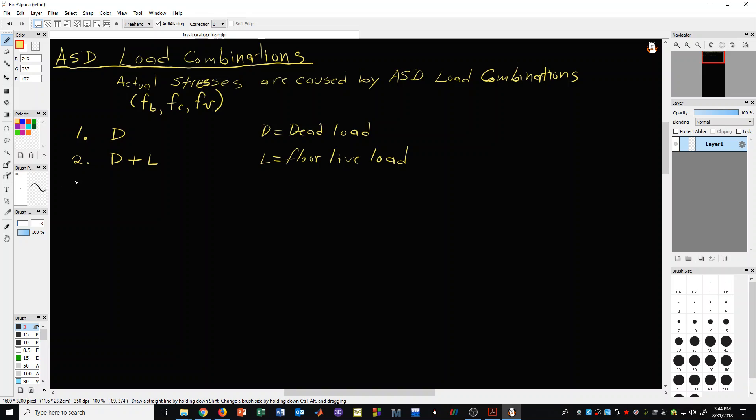Now, the third ASD load combination is dead plus L sub R or snow or possibly rain. Notice here that live load on the roof has a subscript R, so it's very important for us to always remember that L sub R is roof live load. It's not a floor live load, and that is different.